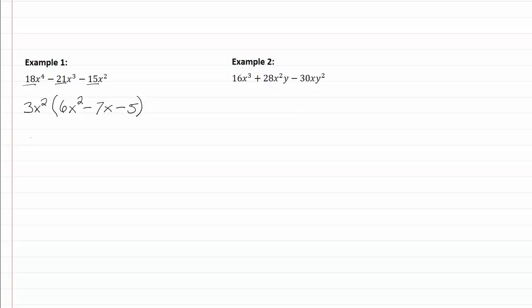I can now factor the trinomial part, the stuff in the parentheses by using trial and error. So 6, first thing that comes to mind is 2 and 3x, so I'm going to put those in.